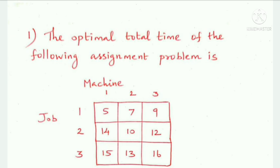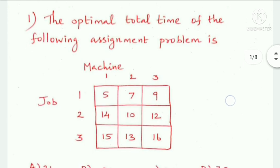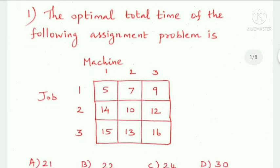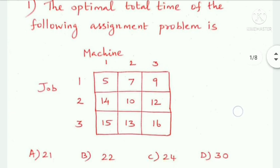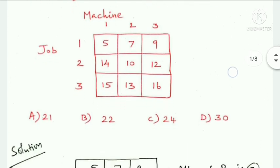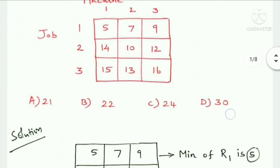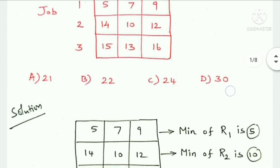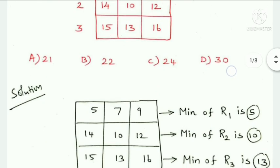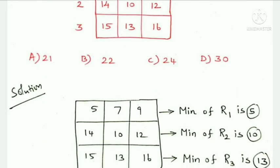The optimal total of the following assignment problem is to be found. It is a 3×3 matrix. First, you need to identify the row-wise minimum values.